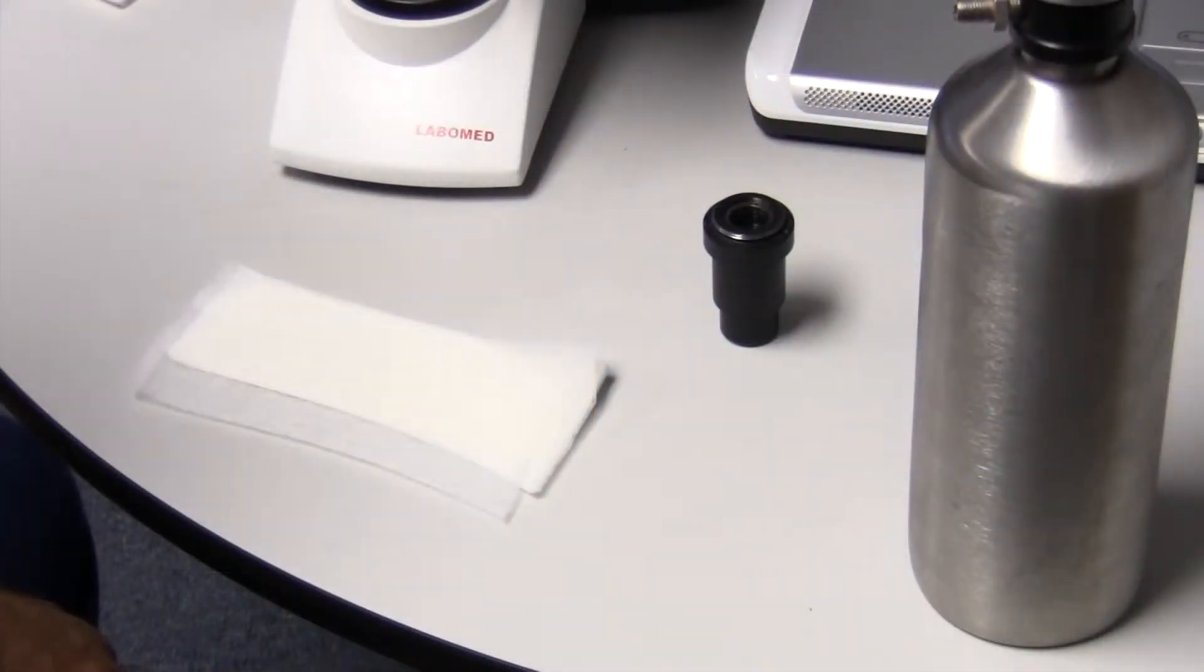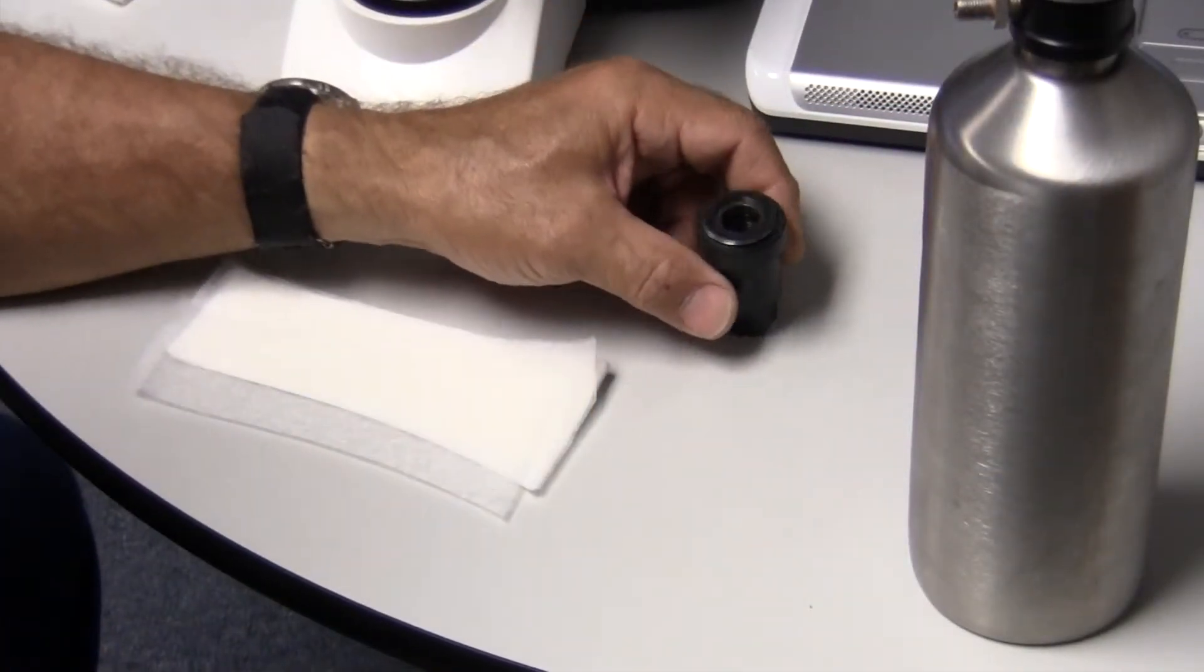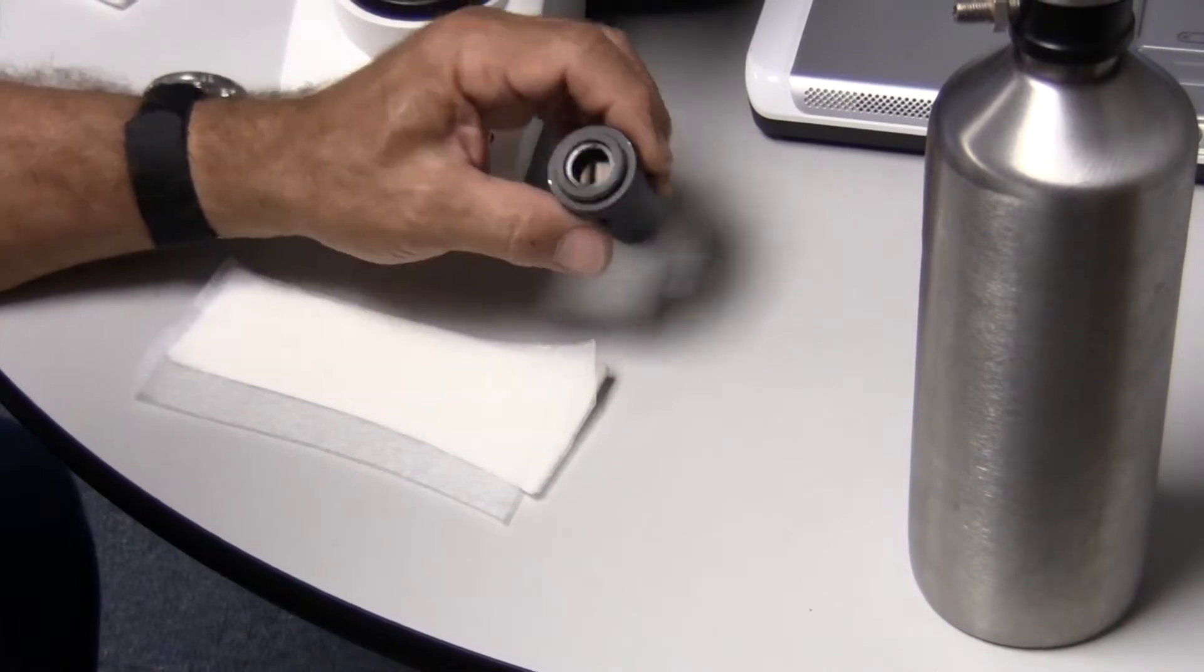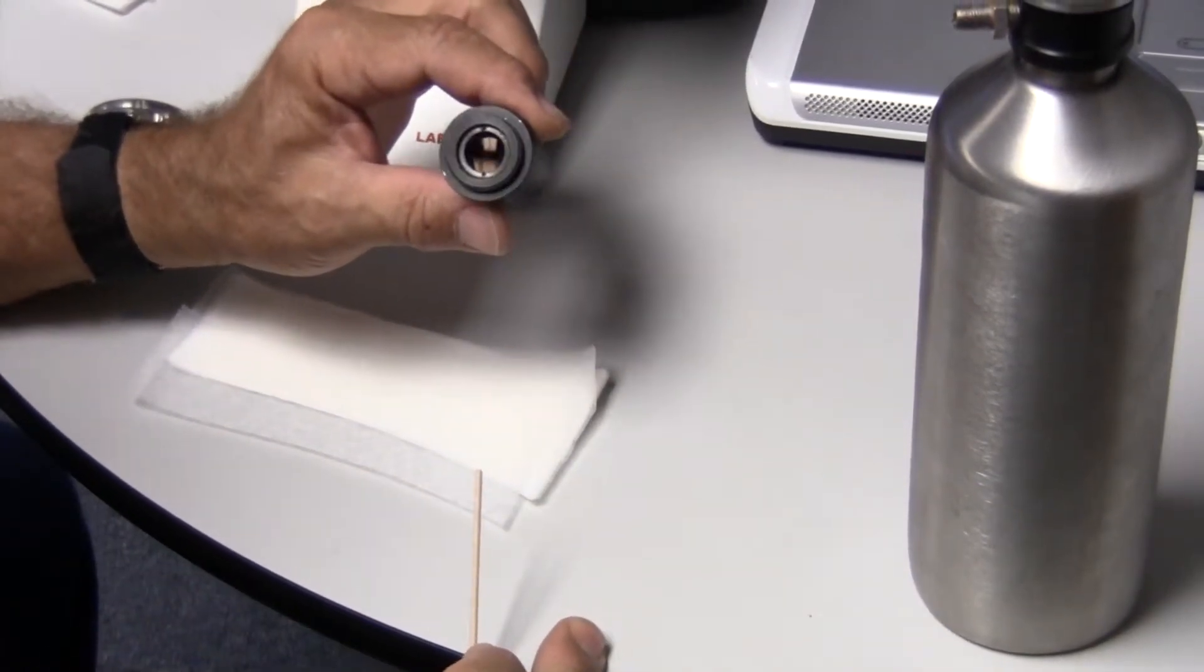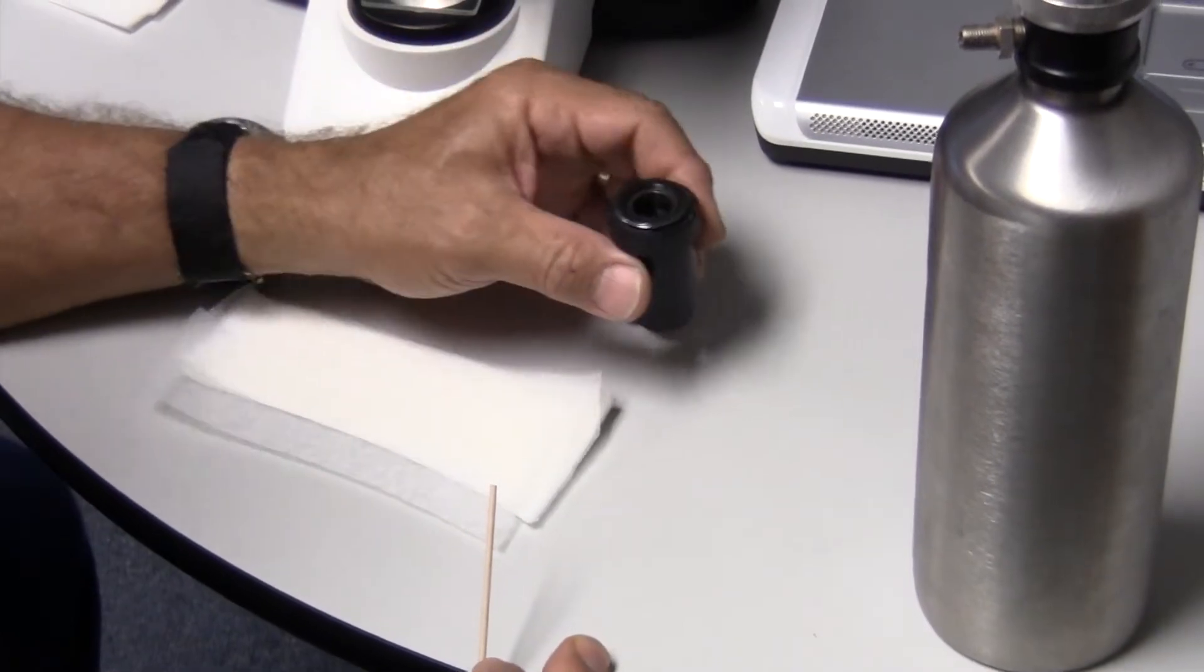Okay, now we're going to go over how to clean optical lenses in a microscope. Because the optical lenses are coated with anti-reflection coatings and other very delicate coatings, it's important to use the right type of paper.